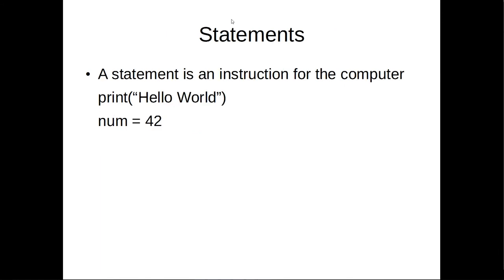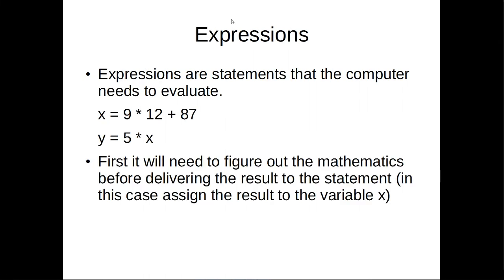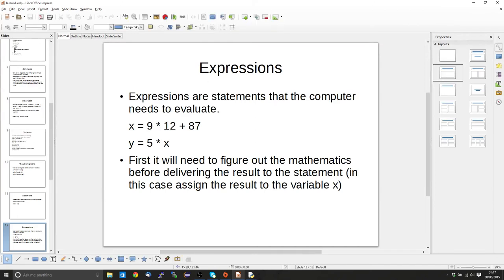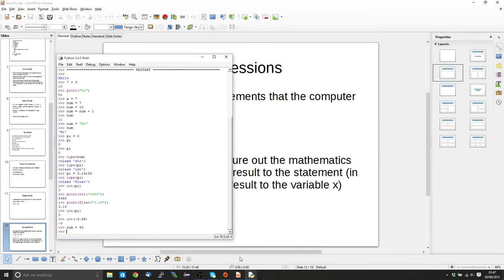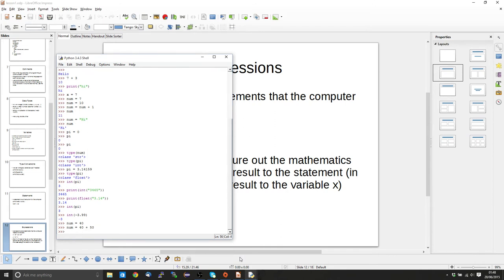A statement is, in the simplest way to describe it, an instruction for the computer. We've already seen print hello world, where we've told the computer to use the print function to print to the screen. We've also seen the assignment statement, where we say I've got a variable identifier and I want it to hold this information. An expression is part of a statement that needs to be evaluated. For example, we can set num equals 40 plus 50 — the interpreter takes everything past the assignment operator, evaluates it, and assigns the result to num, so num equals 90.